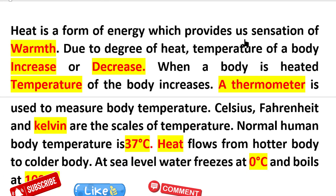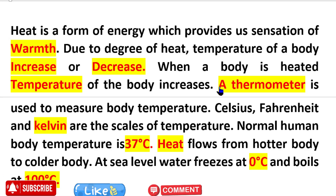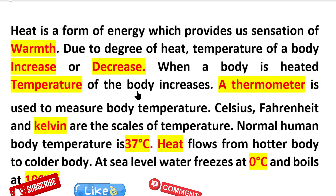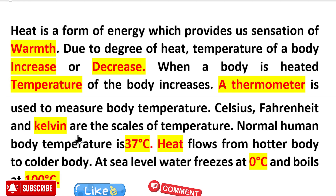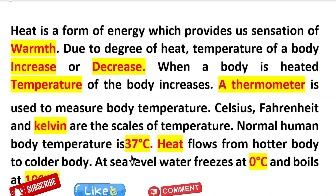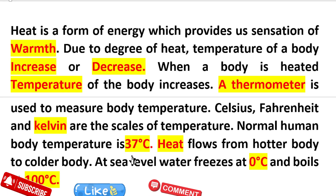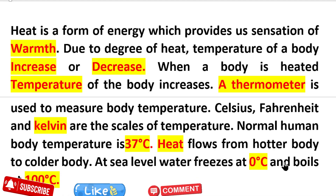Heat is the form of energy which provides a sensation of warmth. Due to the degree of heat, the temperature of the body increases or decreases. When a body is heated, the temperature of the body increases. A thermometer is used to measure the body temperature. Celsius, Fahrenheit, and Kelvin are the scales of temperature. Normal human body temperature is 37 degrees centigrade. Heat flows from a hotter body to a colder body, and at sea level, water freezes at 0 degrees centigrade and boils at 100 degrees centigrade.